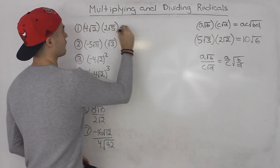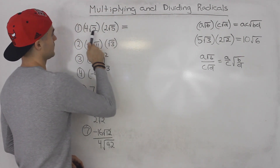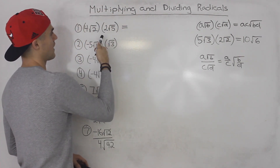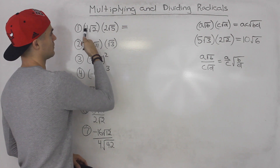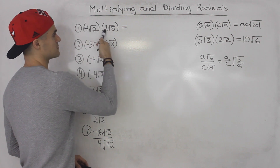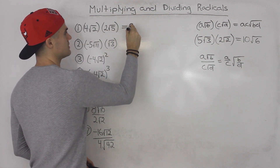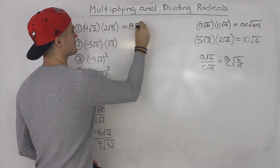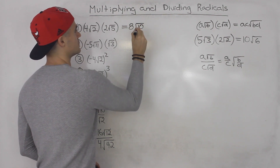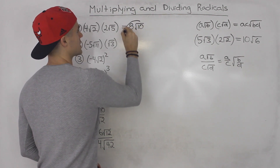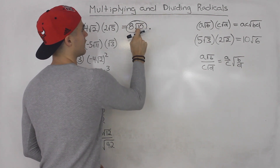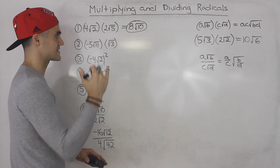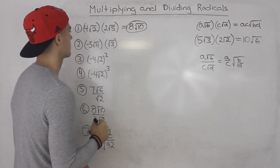Starting off with the first example, we got 4√2 times 2√5. Well, 4 times 2 gives us 8, and then 2 times 5 gives us 10. So 8√10 is the final answer. Notice that √10 we can't simplify any further.